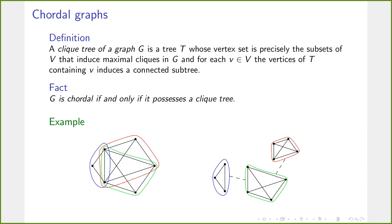We can answer what happens outside R(G) for chordal graphs. The clique tree of a graph G is a tree whose vertices are the subsets inducing maximal cliques in G, such that for each vertex v the cliques containing v induce a connected subtree. A graph is chordal if and only if it possesses a clique tree. Here we see a chordal graph with three maximal cliques highlighted in blue, red, and green, and on the right its clique tree.